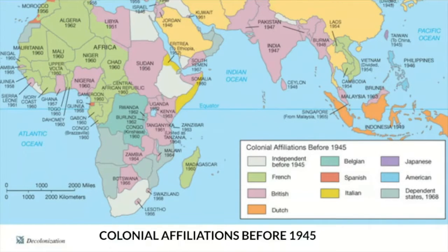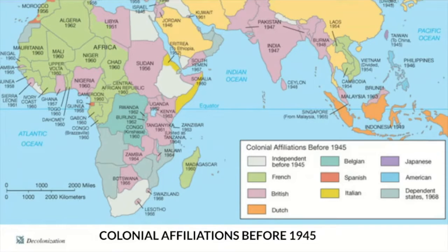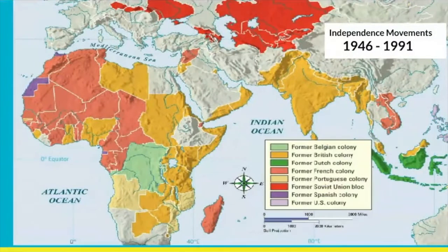China and the Middle East were not directly colonized in the same way. After 1945, there was an explosion of independence movements - either through non-violent diplomacy or violent resistance. Every color on the post-1945 map represents a former European or American colony that gained independence.